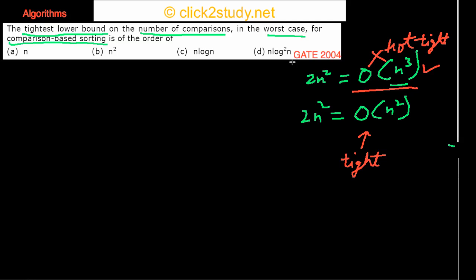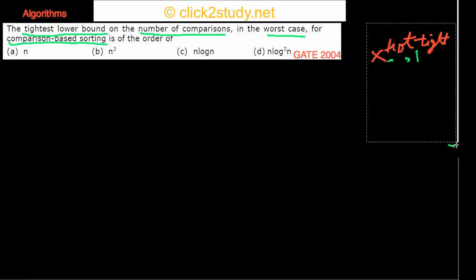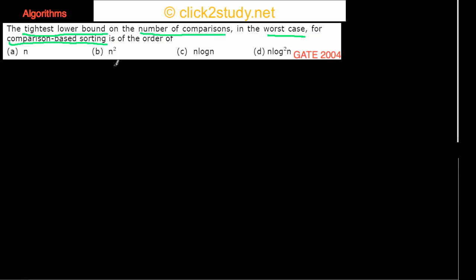Let's see how we prove this. Any comparison-based sorting can be abstracted as a decision tree. You can use a decision tree model to understand any sorting algorithm. Suppose you have three elements a, b, and c that you want to sort using a decision tree model.